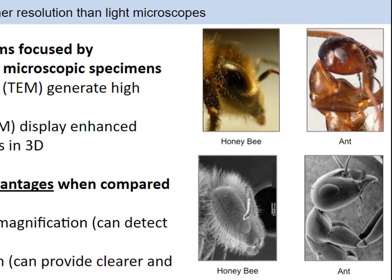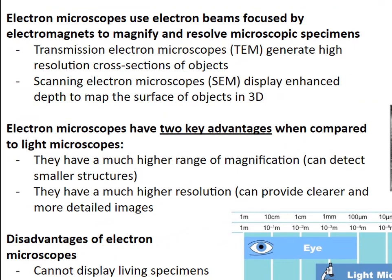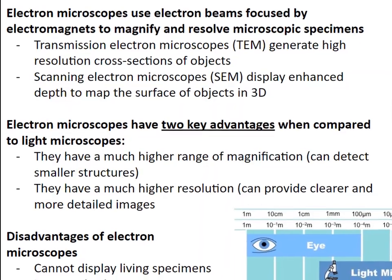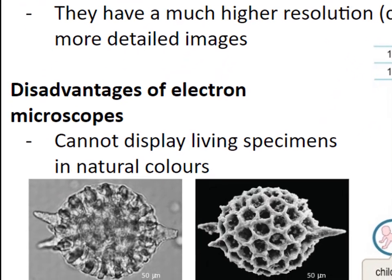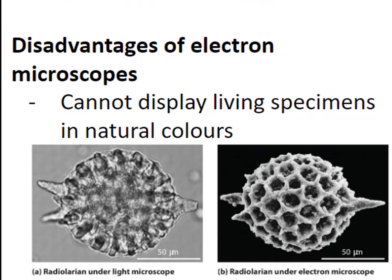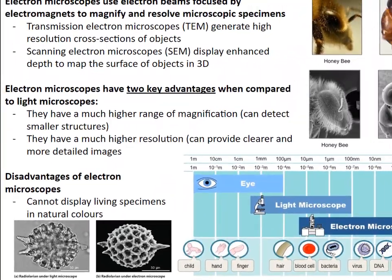With electron microscopes, there is no color that can be seen. However, there are some real advantages. There are two specific types: the transmission electron microscope and the scanning electron microscope. Both generate high resolution — essentially the fine details and intervals that the microscope can see — allowing for incredibly detailed images. These electron microscopes can zoom in up to 250,000 times, compared to light microscopes which can only go up to 2,000 times. While images are in grayscale, this high resolution allows scientists to understand what an object truly looks like in a three-dimensional sense.